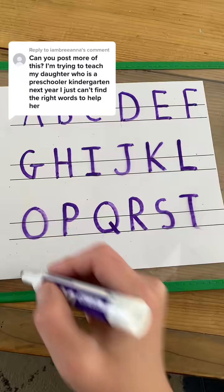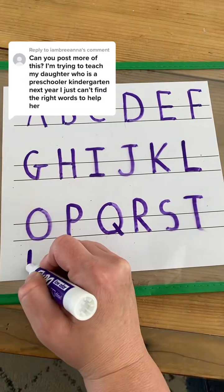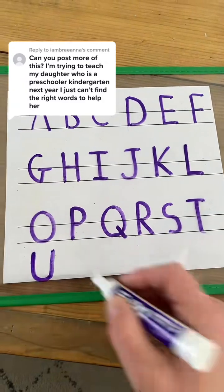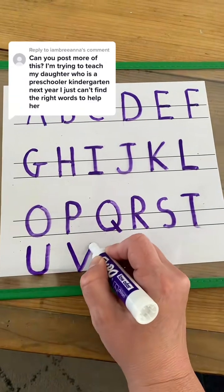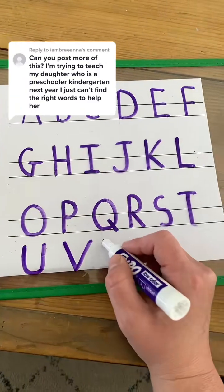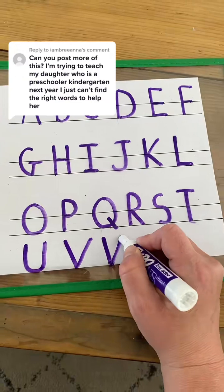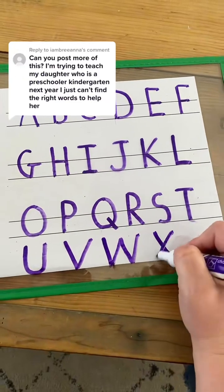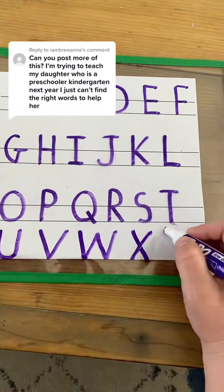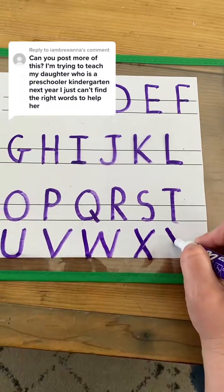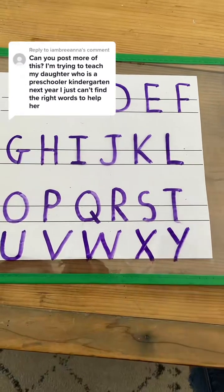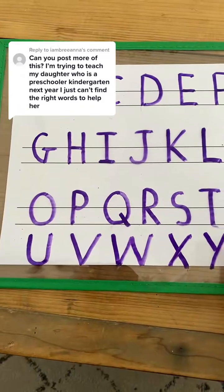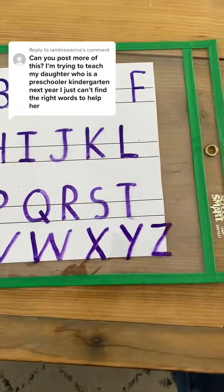I ran out of room but I'll keep going. U is one big line, one little curve, and one big line up. V is two big diagonal lines. W is four diagonal big lines. X is two big diagonal lines. Y is a little line, frog jump, big line. And Z is little line, big line, little line.